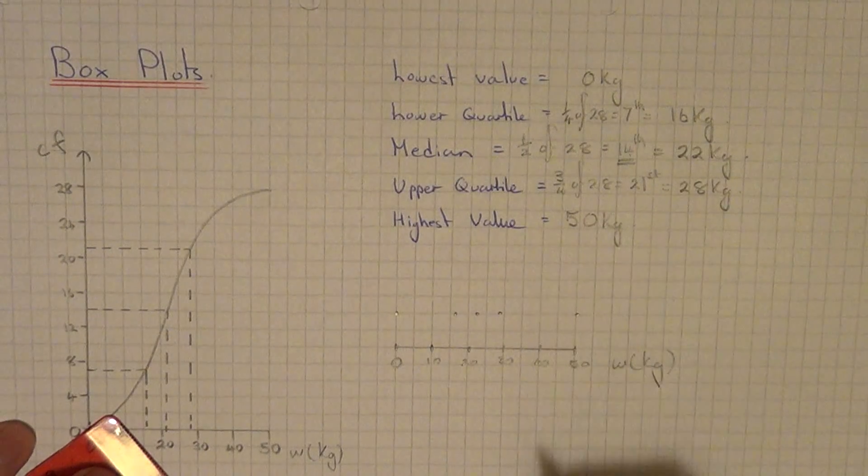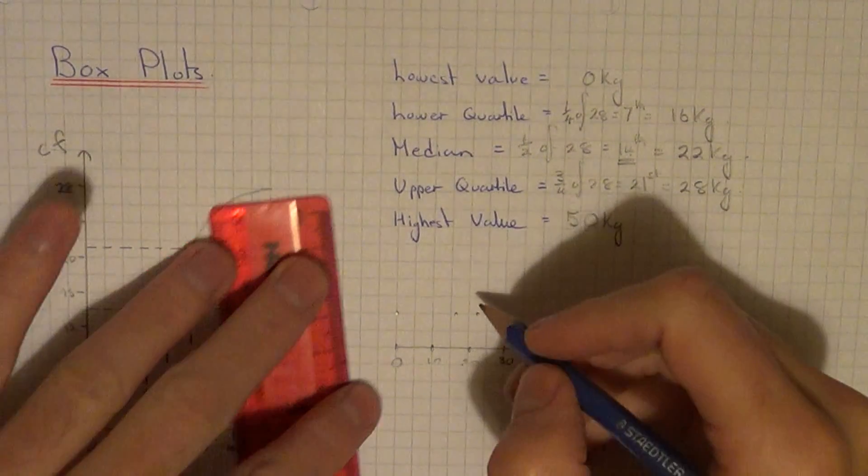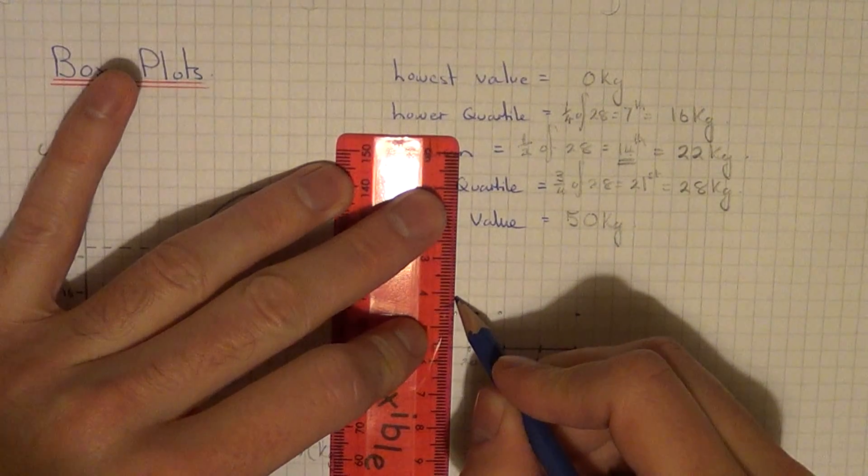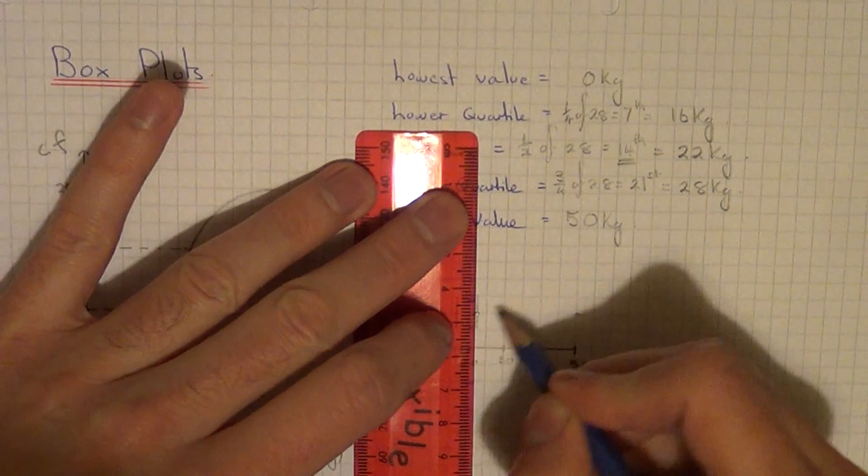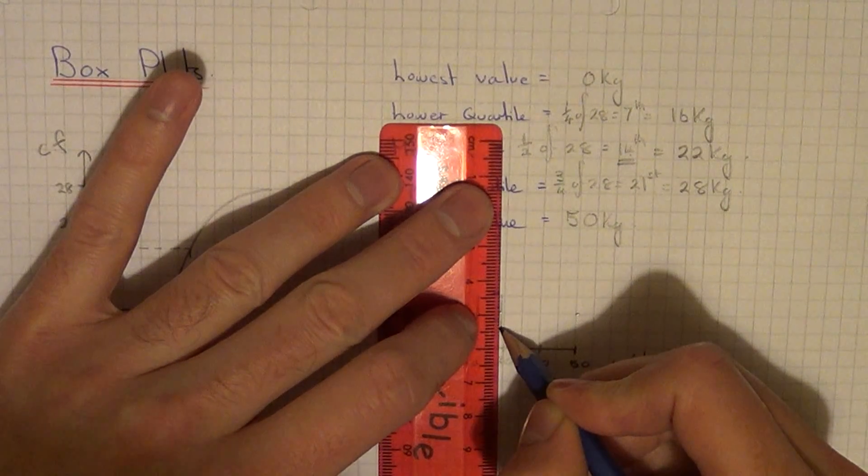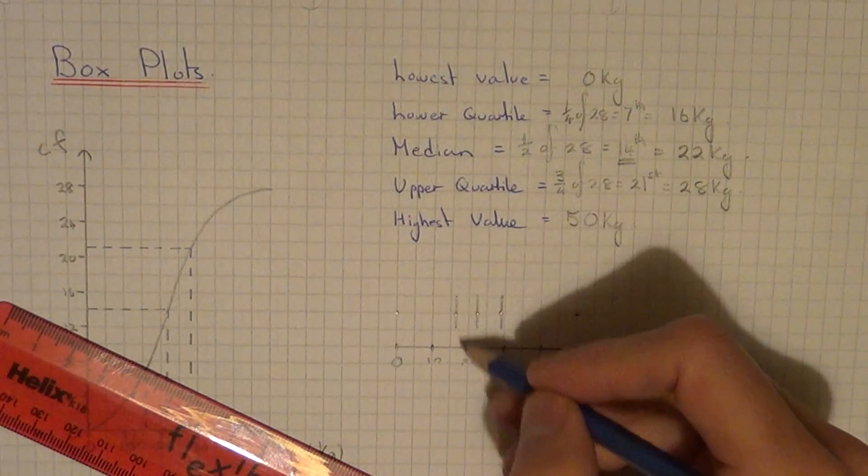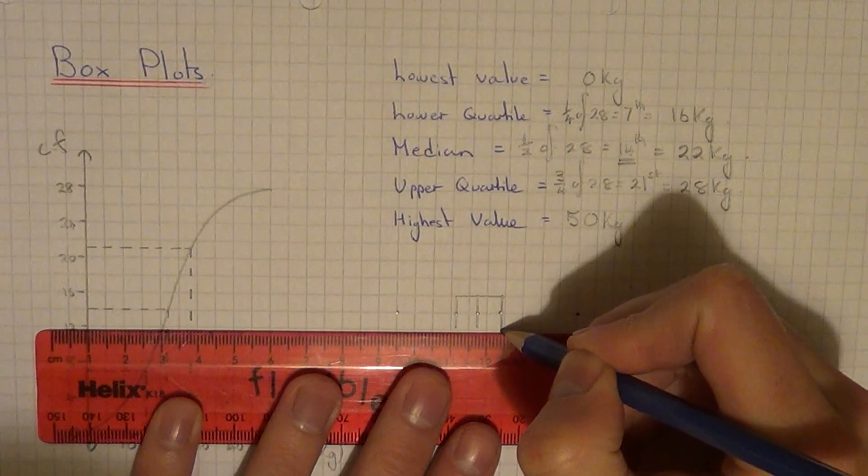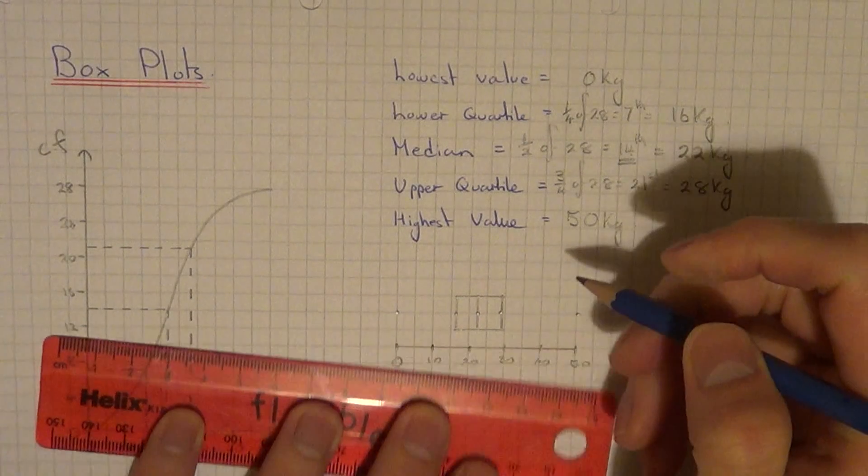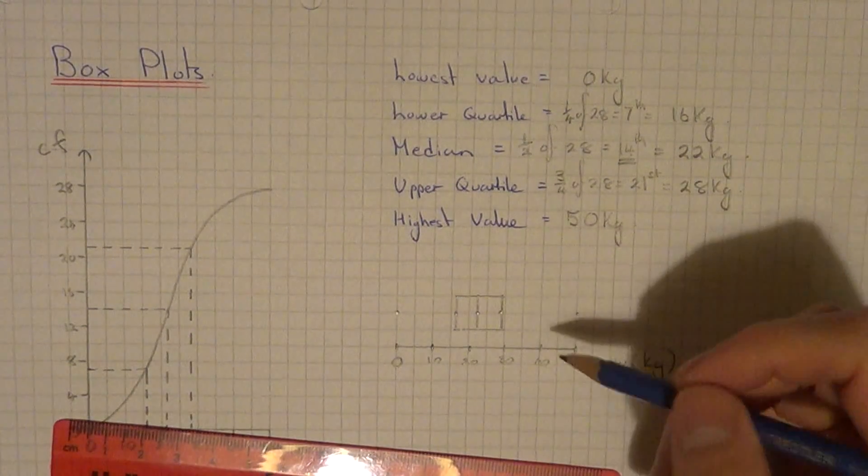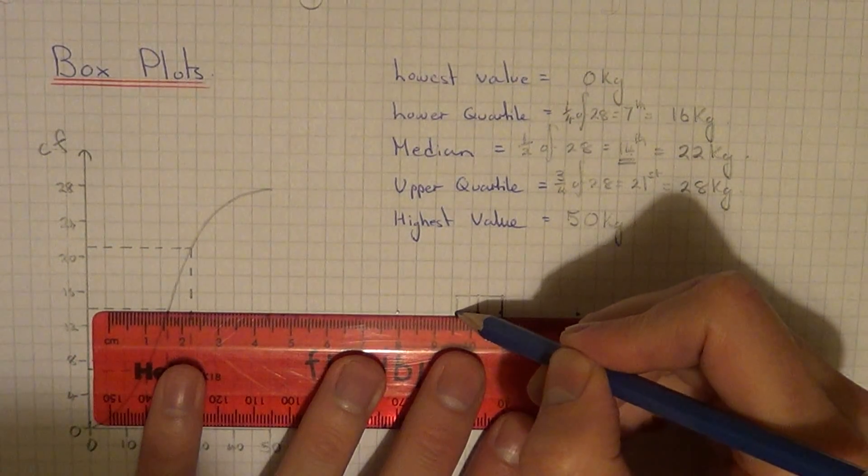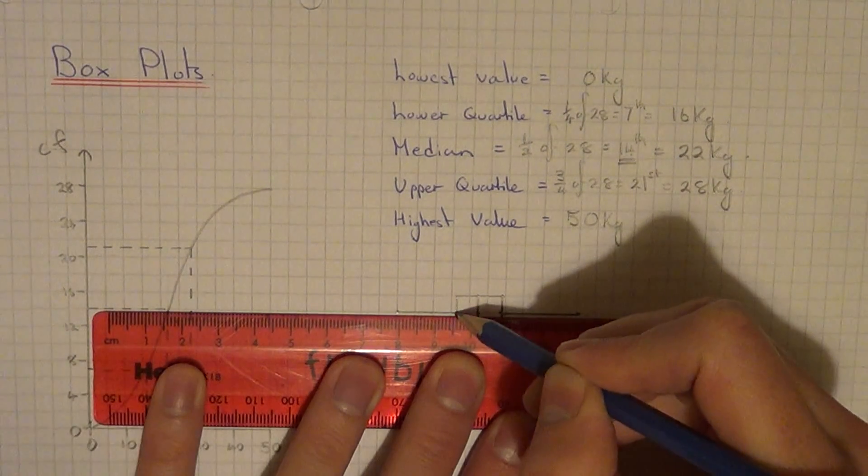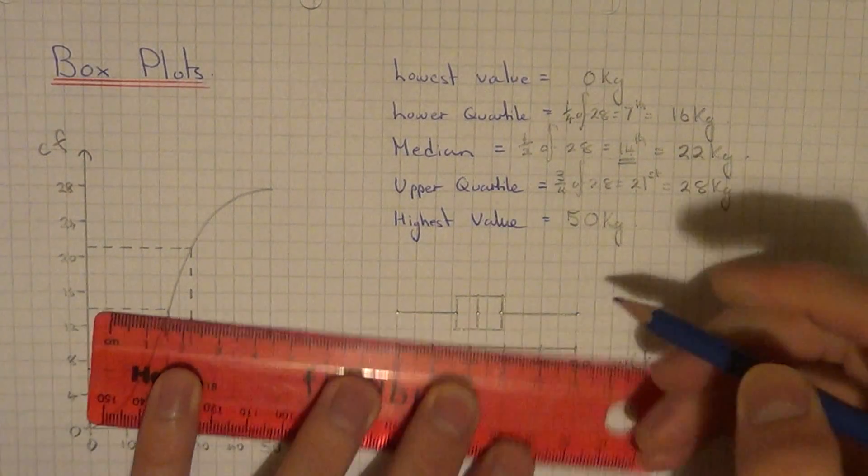So we just need to make the shape of the box plot now. So if we do vertical lines for the three middle values. So I've gone two squares up for each one of these. And just draw two horizontal lines along the top and bottom. And then the final thing you need to do is do your whiskers, which go out from the lower quartile to the lowest value, and the upper quartile to the highest value.